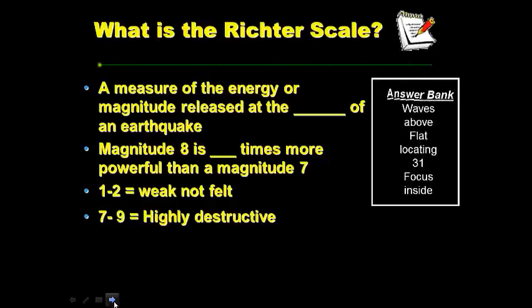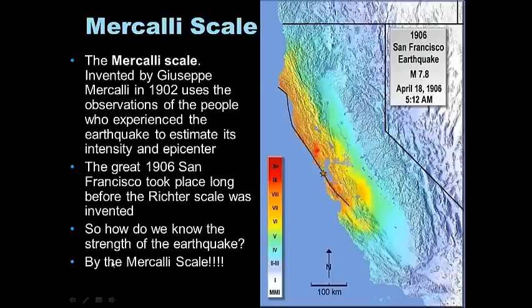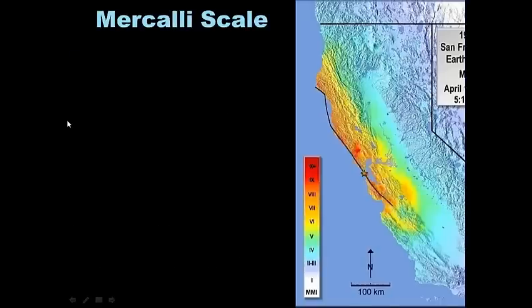The Mercalli scale, originally from 1902, uses observations of people who experienced the earthquake to estimate its intensity and damage at the epicenter. The 1906 San Francisco earthquake occurred long before the Richter scale, so we couldn't measure it directly — we know its strength through the Mercalli scale by talking to people. A seismic shake map of the 1906 earthquake shows red areas where shaking was greatest and bluer areas where it was barely felt.